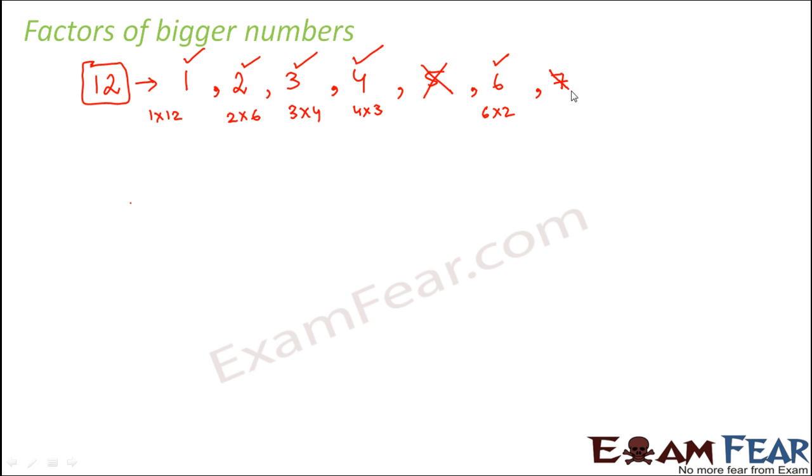What about 7? No, 7 is not a factor. 8? No. 9? No. 10? No. What about 11? No. What about 12? Yes, 12 again is a factor because 12 into 1 is 12.